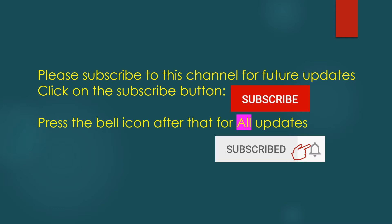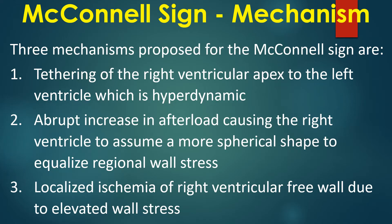Three mechanisms proposed for the McConnell sign are: 1) tethering of the right ventricular apex to the left ventricle, which is hyperdynamic; 2) abrupt increase in afterload causing the right ventricle to assume a more spherical shape to equalize regional wall stress; 3) localized ischemia of the right ventricular free wall due to elevated wall stress.